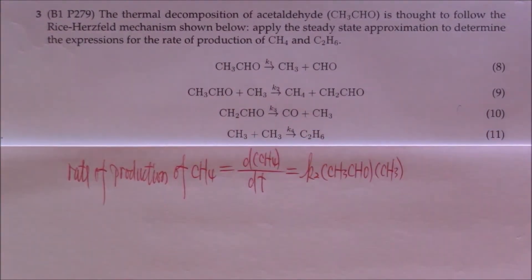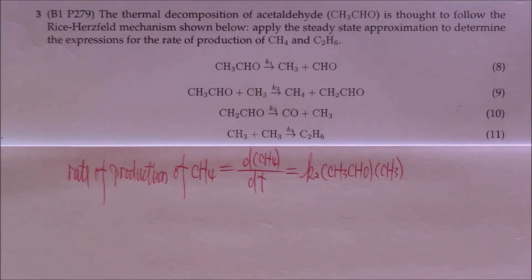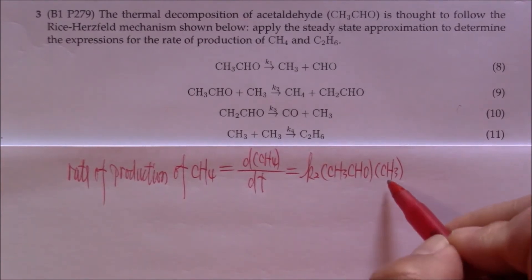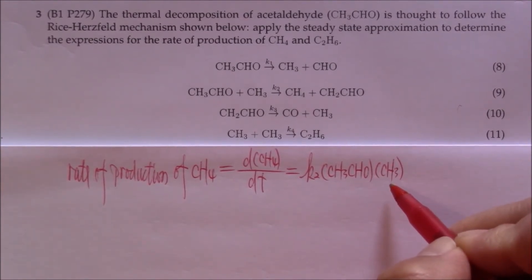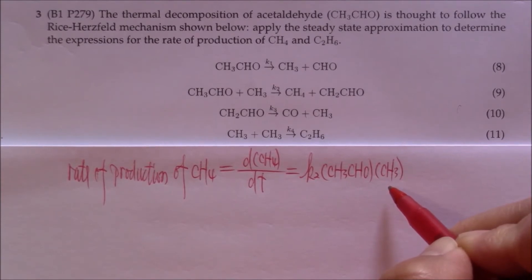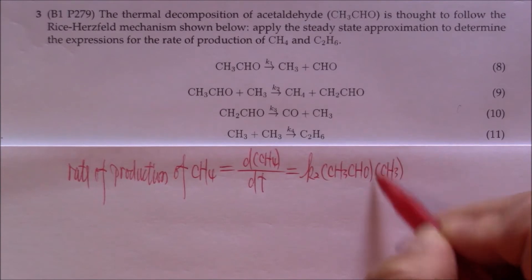When we look at the rate law expression, we find that it contains one intermediate. As we know, the final rate law cannot contain any intermediate. Therefore, we have to eliminate the intermediate.